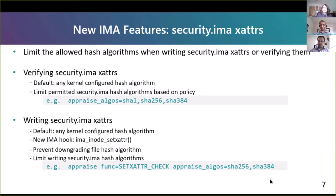The security.ima xattrs contain either file hashes or signatures. Anyone with real root privileges may write security.ima xattrs. Up to now, file signatures can be based on any hash algorithm. One reason for this patch set is to prevent writing unsupported hash algorithms, and the other is to prevent inadvertent downgrading of file signatures. For example, existing file signatures may already exist on the file system. Migrating from one hash algorithm to another requires allowing existing file signatures to continue to be verified, while preventing downgrading of new file signatures. As seen in example policy rules, the appraised algorithms differ.